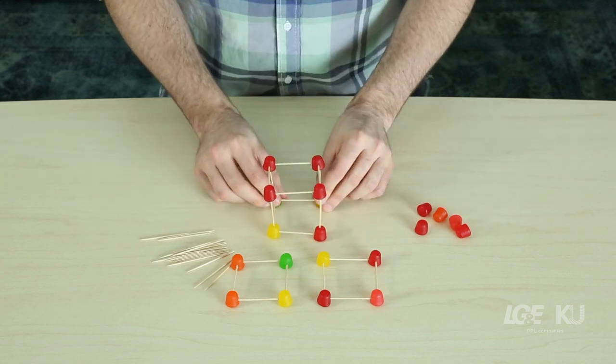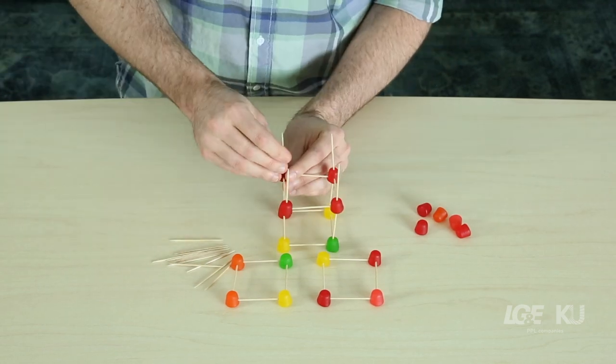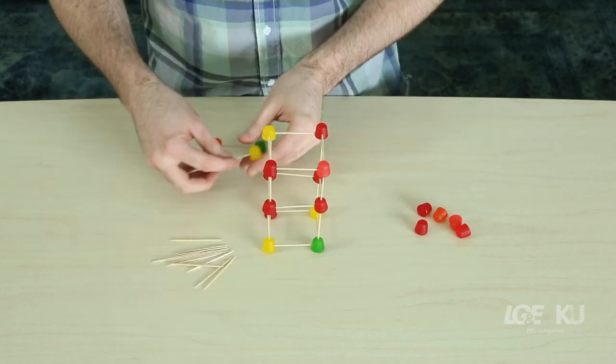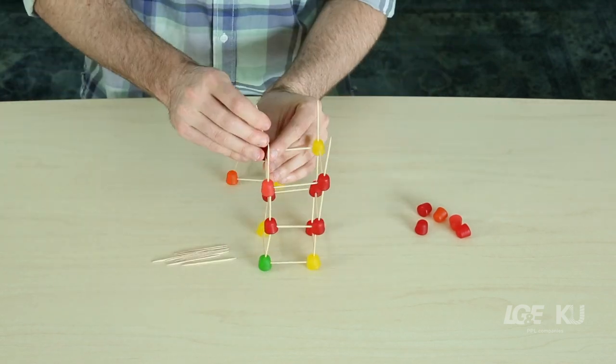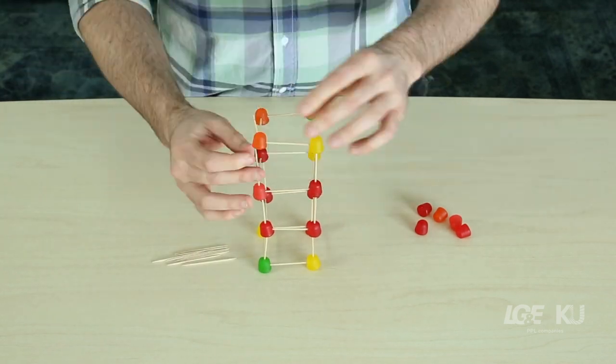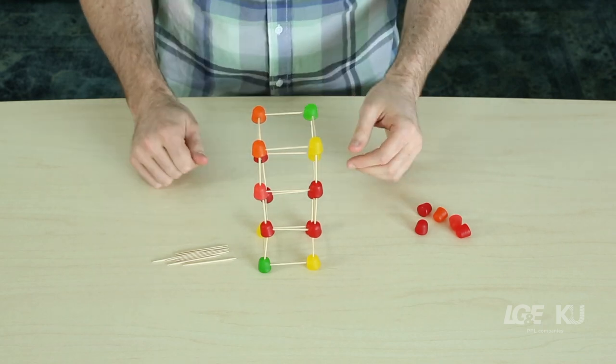Make another cube on top of that one. And another on that one. Now your tower is three cubes high.